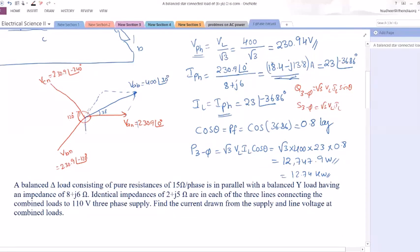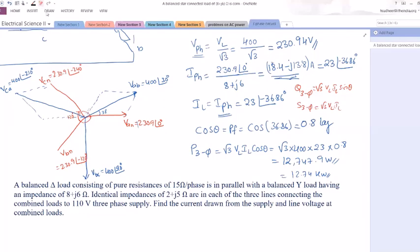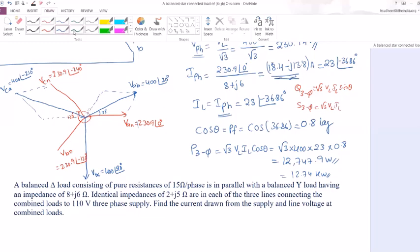Then VBC, it will be exactly here. VBC is equal to 400 at an angle of 90 degrees. So VCA, if you take here, this will be VCA, that is 400 at an angle of minus 210 degrees. So this is minus 90 degrees. This is about phase voltages and phase line voltages.